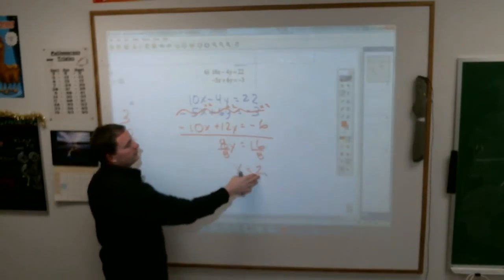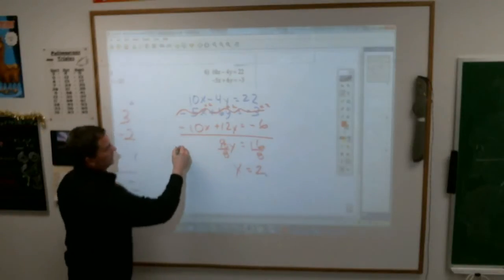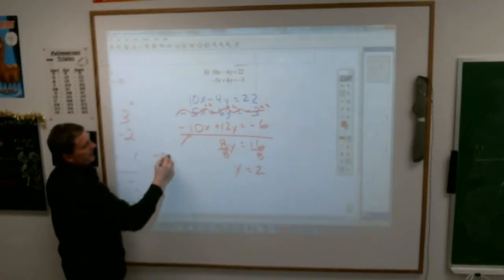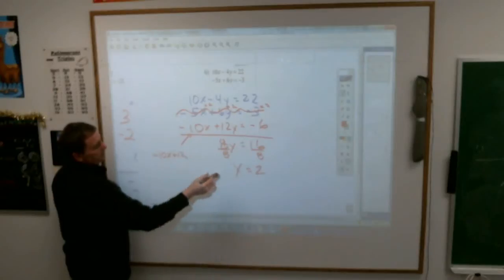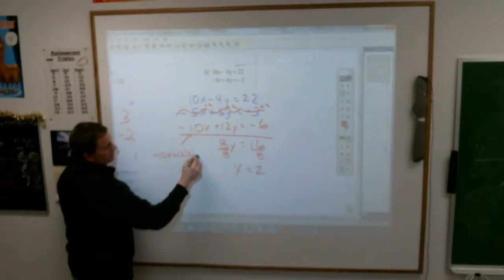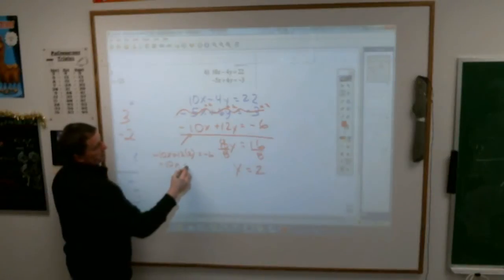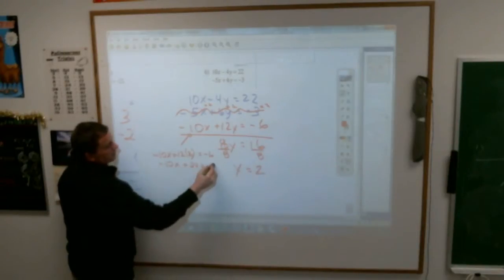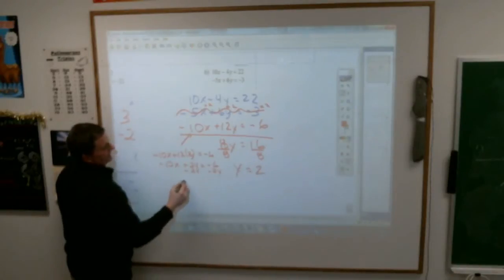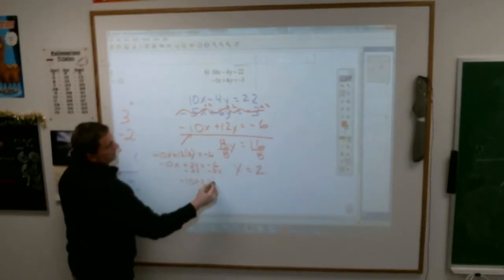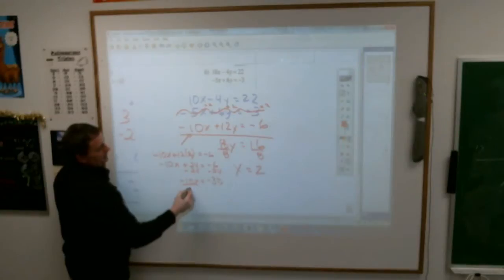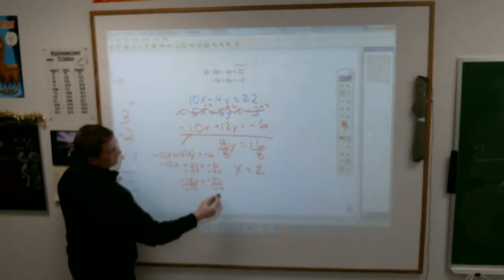So then if I put 2 in for Y, I'll do it in this one here. Negative 10x plus 12 times 2 equals negative 6. Negative 10x plus 24 equals negative 6. Subtract 24, subtract 24. Negative 10x equals negative 30. Divide by negative 10. Divide by negative 10. And then you get a positive 3 for x.